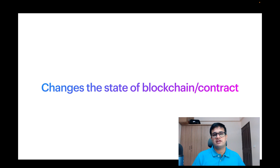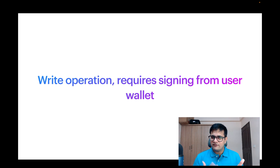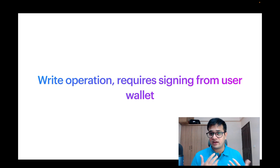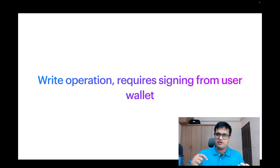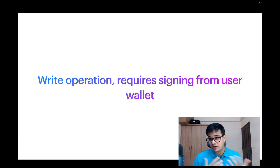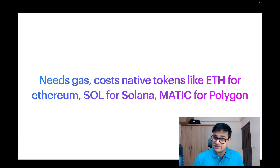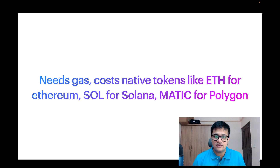Now, what is a transaction? A transaction is something that is broadcasted to the entire network. It changes the state of the blockchain and the smart contract, and therefore it's a write operation. Because it's a write operation, it requires the user to sign the transaction — that is why whenever we do a transaction, a pop-up comes up in MetaMask or other wallets where you need to sign it before it goes ahead. Transactions cannot be done without the private keys.